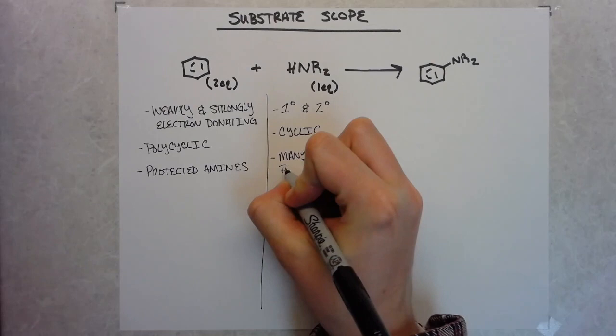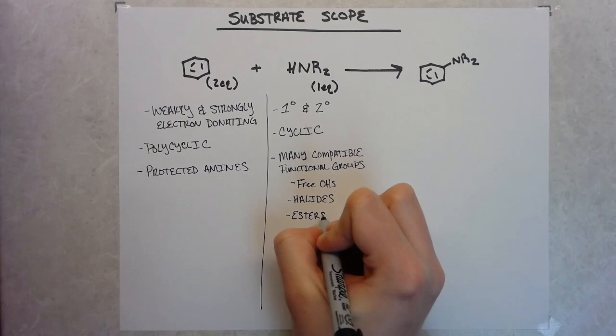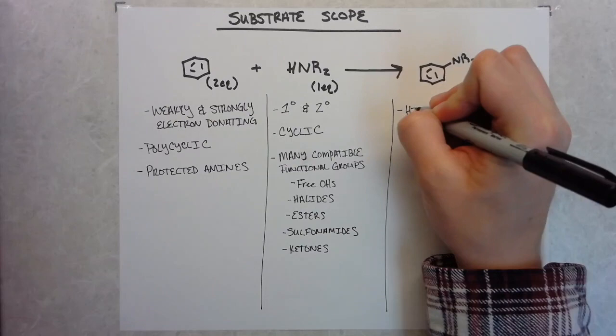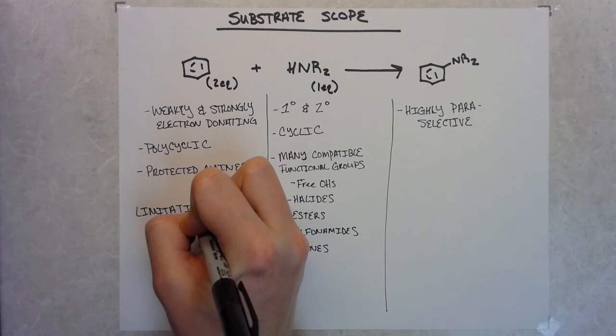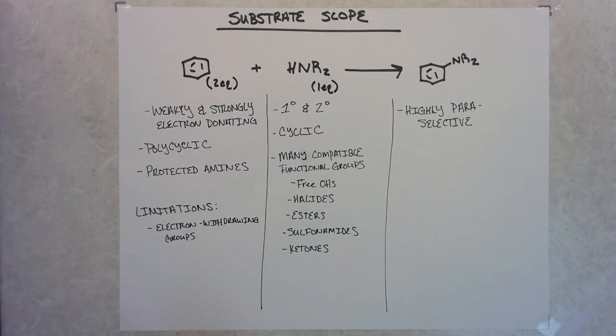But I think the cases where I would have liked to have seen them being put in the paper were strongly electron-withdrawing groups on an aerine. So for instance, something like methylbenzoate or benzonitrile, basically putting a nitrile group on one of these aerines. And looking through the SI, they do include some of these examples, and they didn't put them in the paper because they didn't work. But I think it's still an important thing to note. Strongly electron-withdrawing substituents don't work with this reaction.